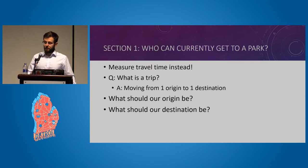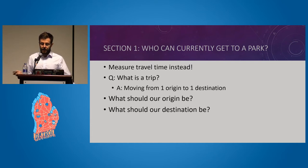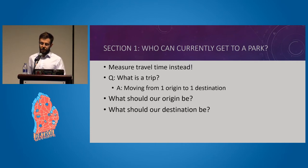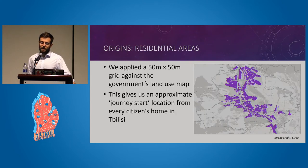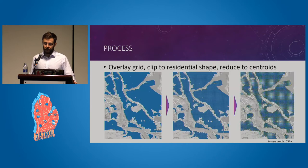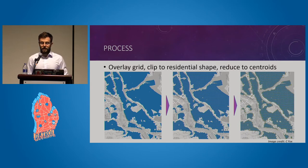We want to measure people's accessibility to parks on this basis, breaking it down one origin to one destination at a time, then repeating. Tbilisi's government knows which land areas are residential, which makes for a good approximation of where people are starting their trips. We overlaid a grid where every square is 50 meters by 50 meters — pretty high resolution — and took the center point of each grid square to generate origin points.